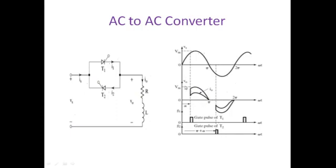We have delivered power to the load only from the firing angle to 180 degrees in each half cycle. If you compare the voltage waveforms of input and output side, parts of the waveform are removed. Taking the RMS values — root mean square values — of the output voltage, it is definitely less than the RMS value of the input voltage, so we deliver less voltage to the load.